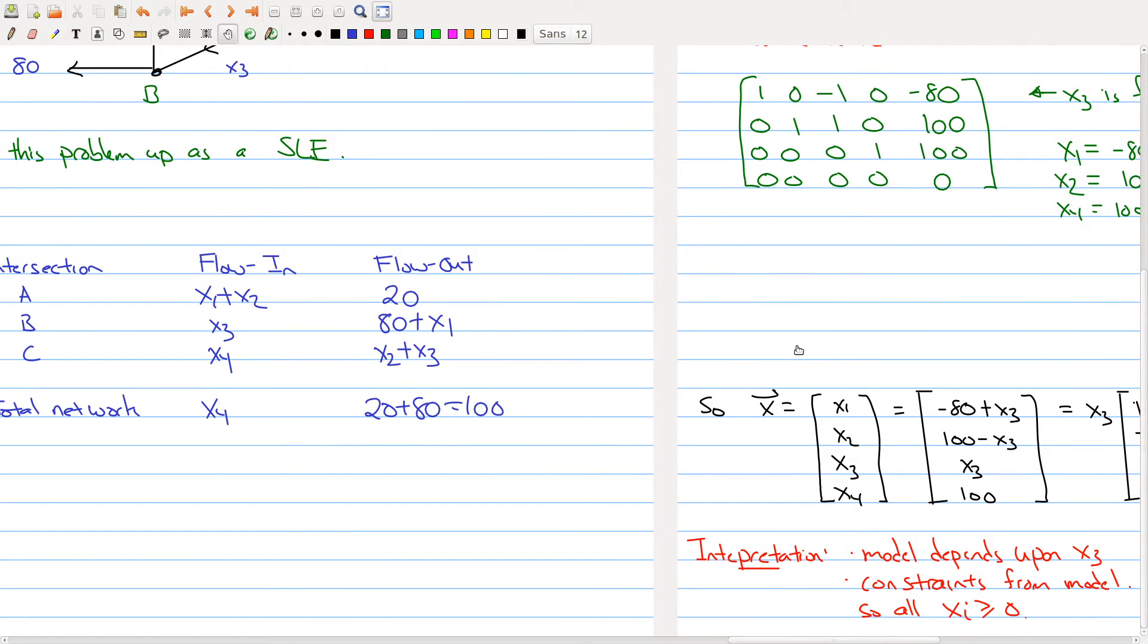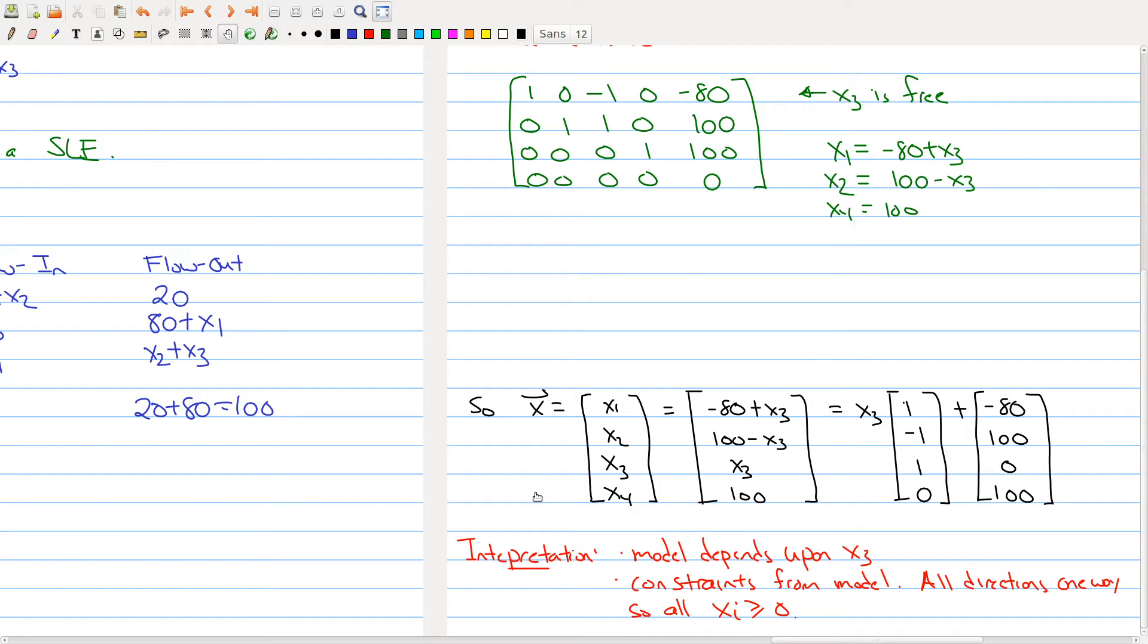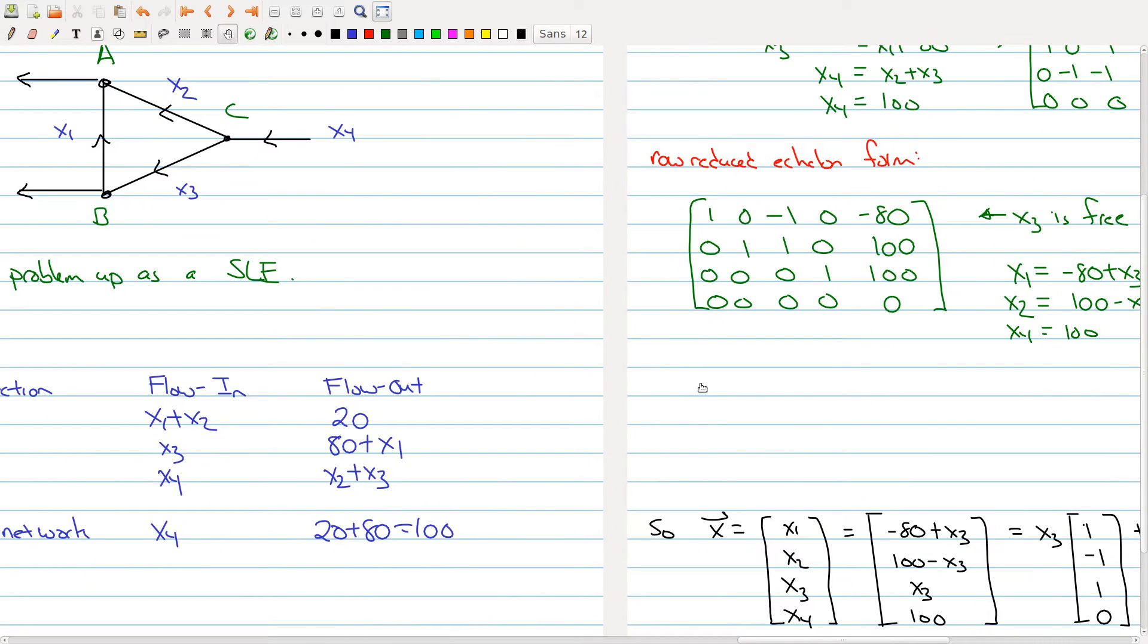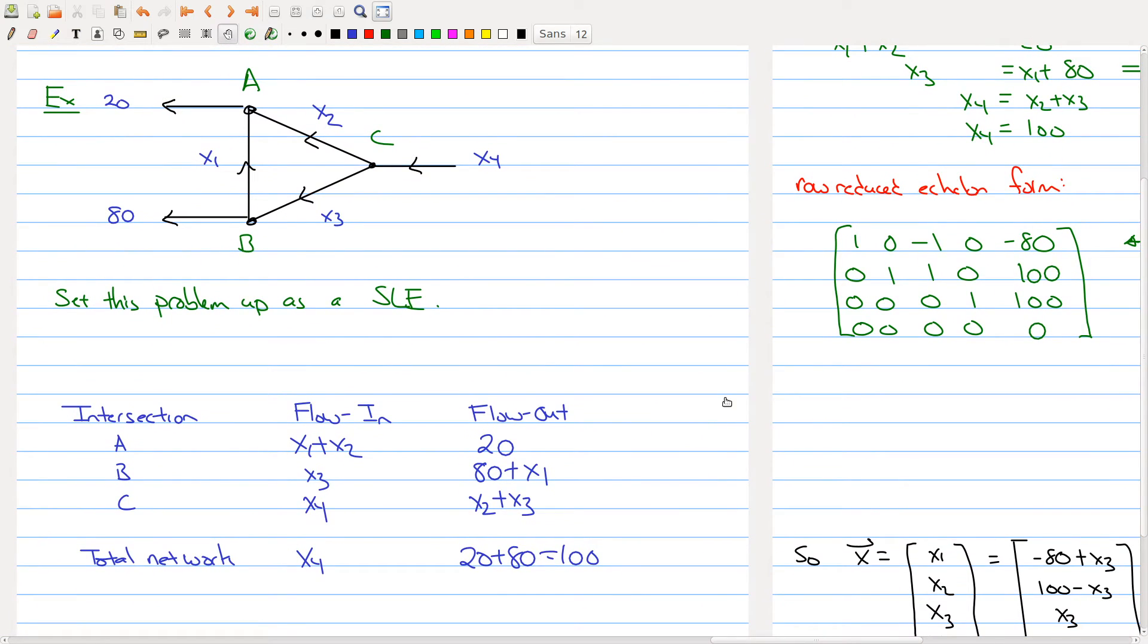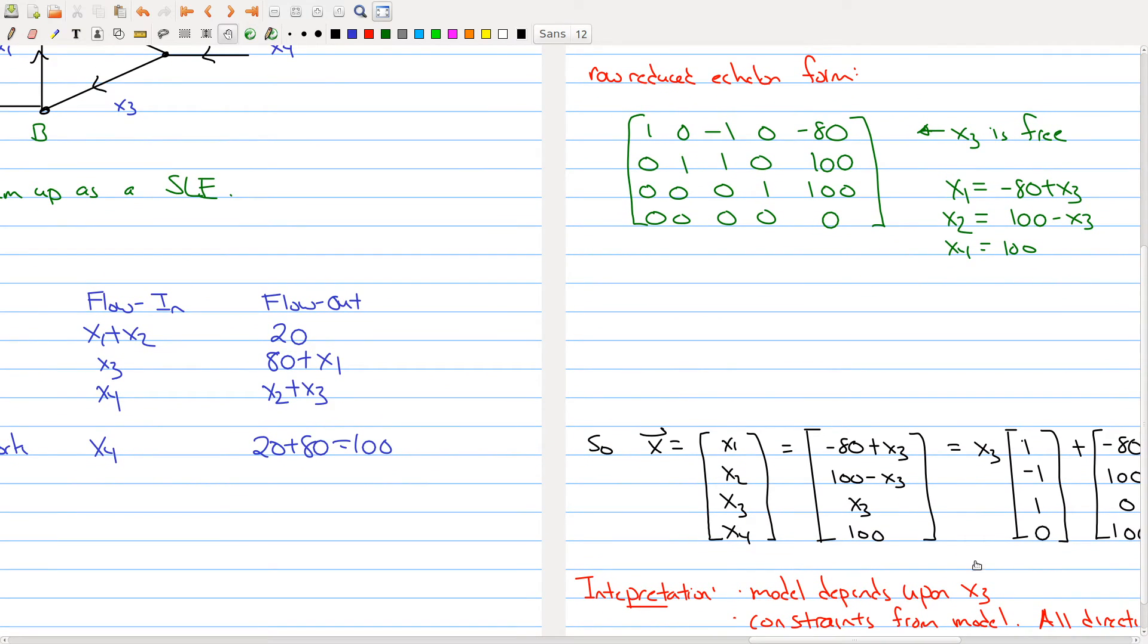You have to be a little careful when you get these answers, because you're looking at a real life situation, you're actually modeling something. Our model says it depends upon x3, and that makes sense because you have something coming into the network. We want to know exactly how much goes here. Once we know how much goes here, we know how much goes here. Once we know how much goes here, we know how much goes out. So that tells us what x1 is. All the information we need should be captured in x3.